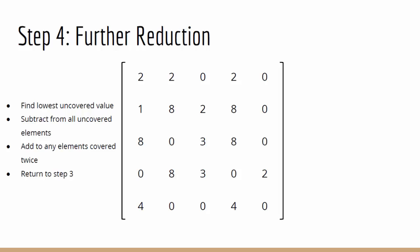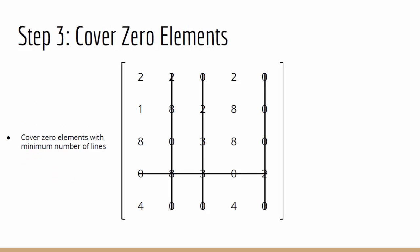Now we can return to step 3, where we have to cover the 0 elements with the minimum number of lines. In this case, we can use 4 lines, 1, 2, 3 and 4, and all the zeros are covered.